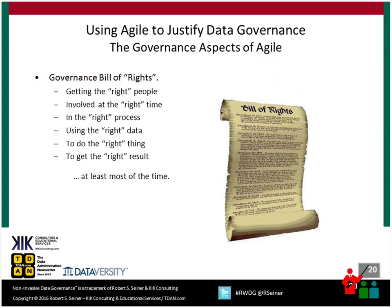I talk often about something I call the data governance bill of rights. It's about getting the right people involved at the right time, the right process using the right data to do the right things to get the right results. That's exactly what agile is trying to do, but in a very quick and effective manner. So if we can look at the approach agile development teams are taking and align it with our governance approach — both having the goal of getting the right people involved at the right time — we can use that to justify the need for data governance.